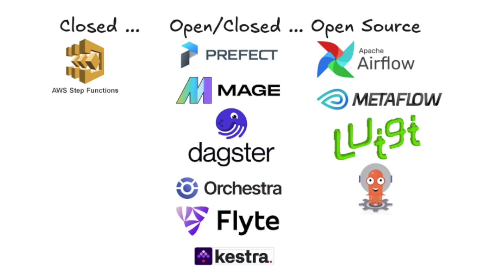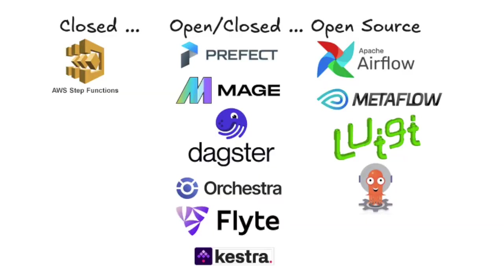On the closed source side, you have AWS Step Functions — totally closed, 100%. On the fully open source side, you have Apache Airflow, Metaflow, Luigi, and Argo. Then there's the open/closed middle ground, where most of the new tooling falls — they have an open source option, but you're not always sure how much is open versus closed, and they offer a managed paid version.